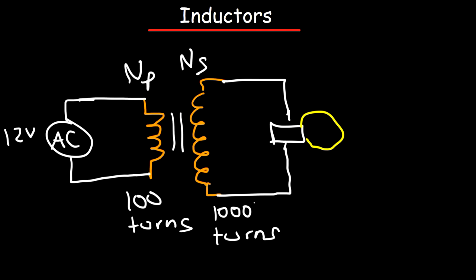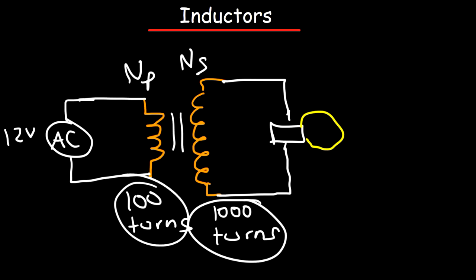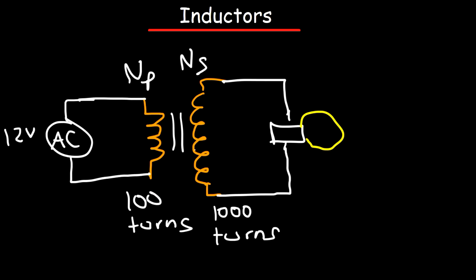Now look at the ratio between the turns in the secondary coil and the turns in the primary coil: 1,000 to 100. If you divide 1,000 by 100, you get a ratio of 10 to 1. So for every coil on the left side, there are 10 coils on the right side.